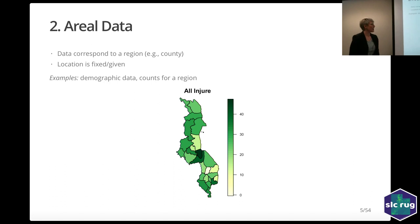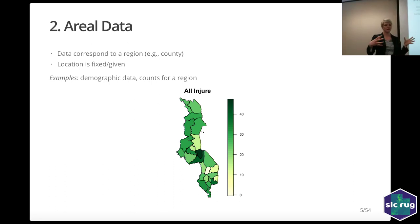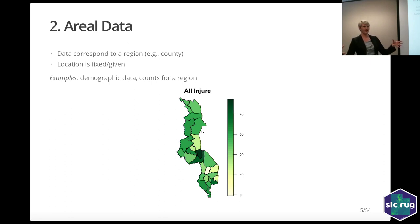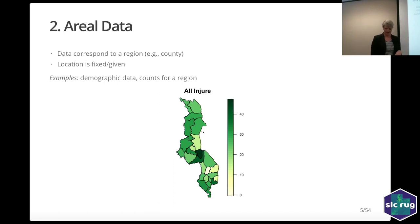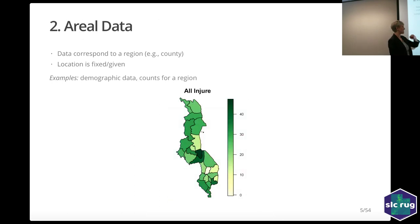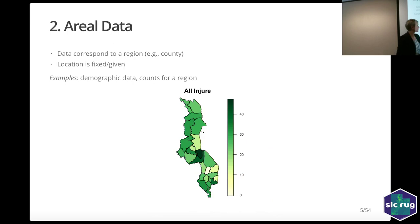The other type of data we're going to look at is areal data — counts or measurements across an entire region. This comes up a lot in health data, where you're looking at counts of cancer in a specific region by county, or demographic data by zip code or county. This specific data is from Malawi, showing the percent injured in the last two weeks from when they took the survey.